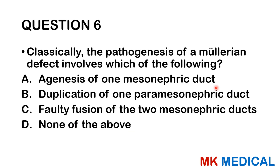Question six: Classically, the pathogenesis of a Mullerian defect involves which of the following? A, agenesis of one mesonephric duct; B, duplication of one paramesonephric duct; C, faulty fusion of two mesonephric ducts; D, none of the above. The answer is none of the above — none of these actually define what a Mullerian defect is.